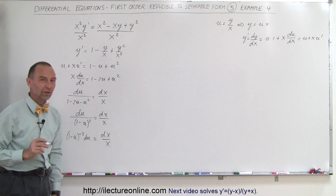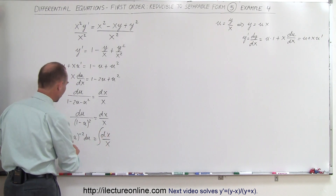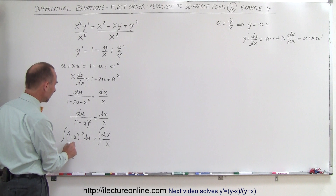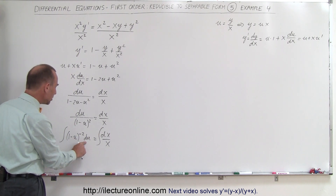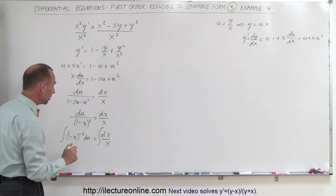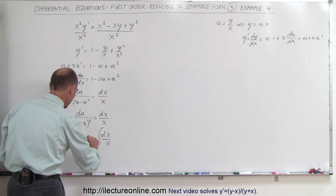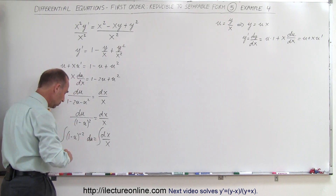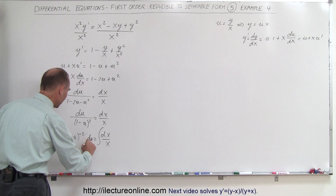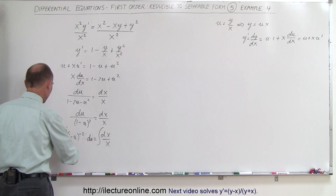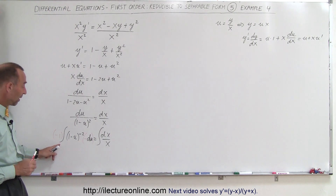Now we can integrate both sides. When we integrate the left side, notice that the differential of (1 minus u) is a minus du. We have a positive du, which means we need to introduce a minus sign. So I'll multiply by minus and compensate by multiplying by minus again — that's where this minus sign comes from.